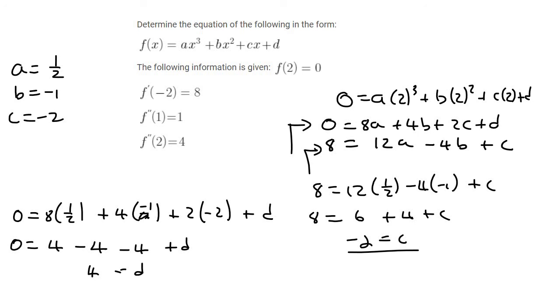And so there we've done it, guys. We've got everything. And so f of x is going to be equal to a half x cubed minus 1x squared minus 2x plus 4.